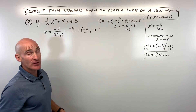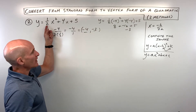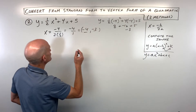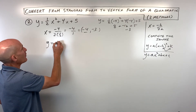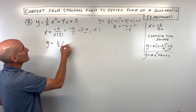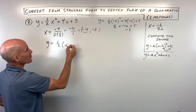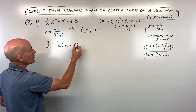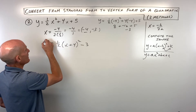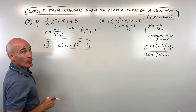Our vertex is at (negative 4, negative 3) and our a value is one-half. Putting it into vertex form: y equals one-half times x minus negative 4 squared minus 3, which simplifies to y equals one-half times x plus 4 squared minus 3. Now we've got it in vertex form.